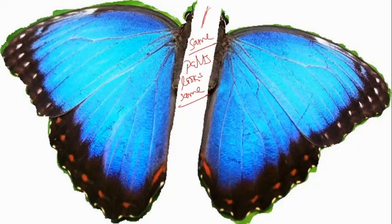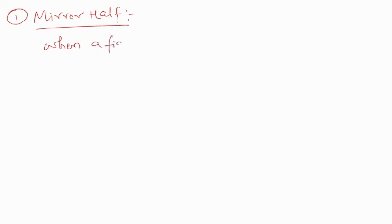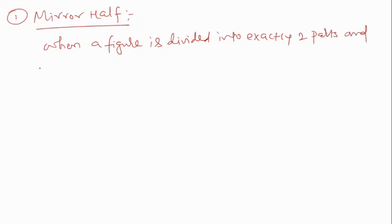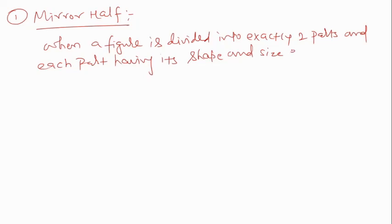So in mathematics, when you divide a figure into exactly two parts, what do we call each part? The concept we derive here is the mirror half. When you divide a figure into exactly two equal parts, each part having its shape and size equal to the other, that part is called a mirror half.